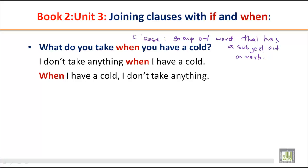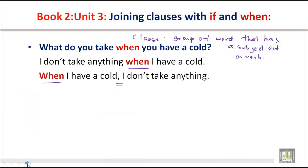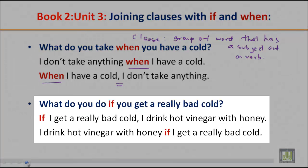Let's look at an example. What do you take when you have a cold? I don't take anything when I have a cold. The same sentence can be written another way: When I have a cold, I don't take anything. When 'when' is in the middle, there is no comma. When 'when' is at the beginning, we have a comma because it's a dependent clause. If I get a really bad cold, I drink hot vinegar with honey.